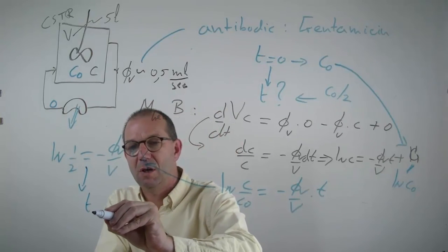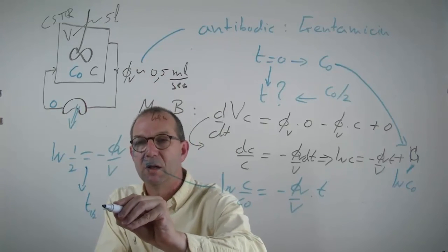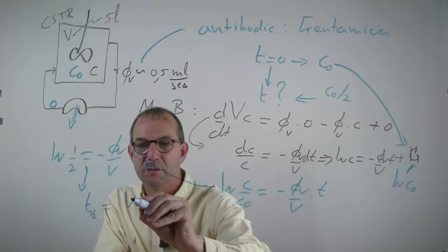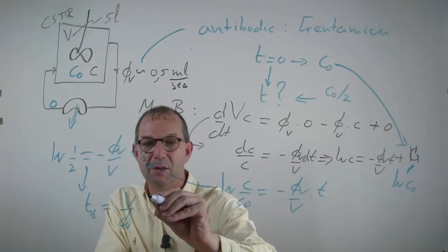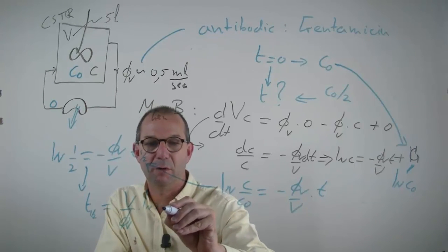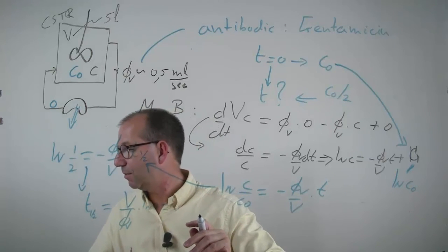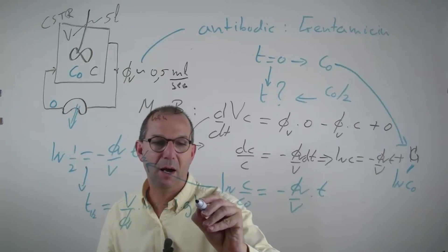And thus, T_half, the half life, half time of this medicine in your body is V over the flow, effective flow through your kidneys, times logarithm of 2, and if I put in the numbers, that is 1.9 hour.